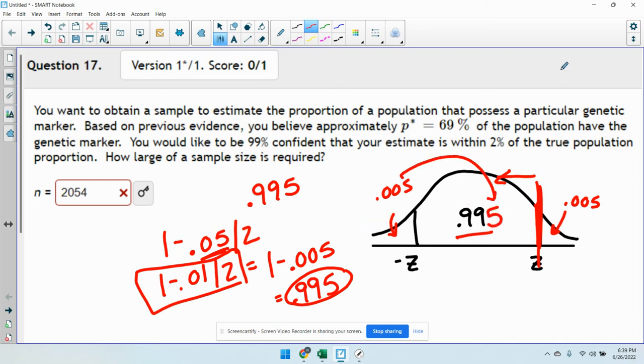So if you do inverse normal, you can just do 0.995, 0, 0, 1, you'll get your answer. Or you could do the inverse normal of 1 minus 0.01 divided by 2, and you'll get the same thing.